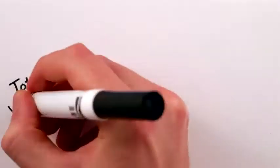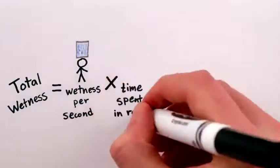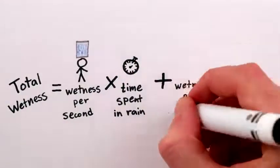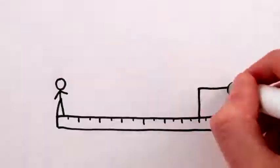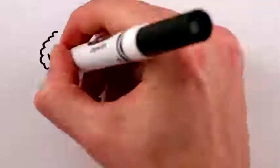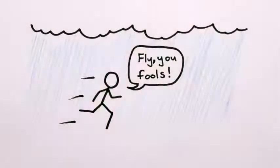So your total wetness is equal to the wetness per second for rain from the top times the amount of time you spend in the rain, plus the wetness per meter for rain from the side times the number of meters you travel. So to stay driest, getting from one point to another, you should try to minimize the amount of water falling onto you from above. And quite simply, that means getting out of the rain as fast as possible.